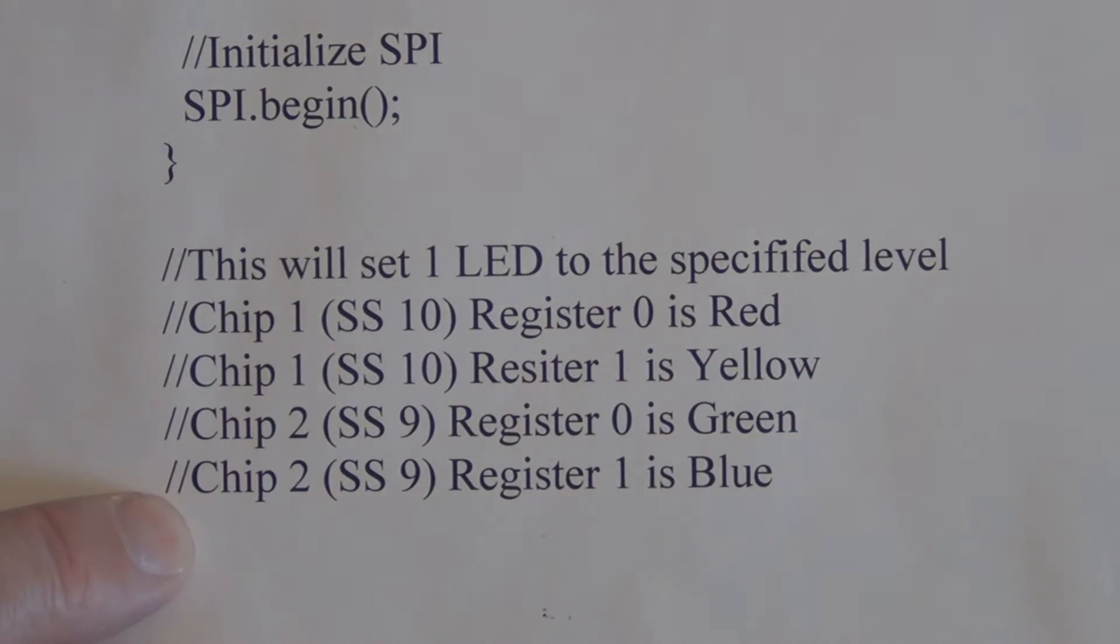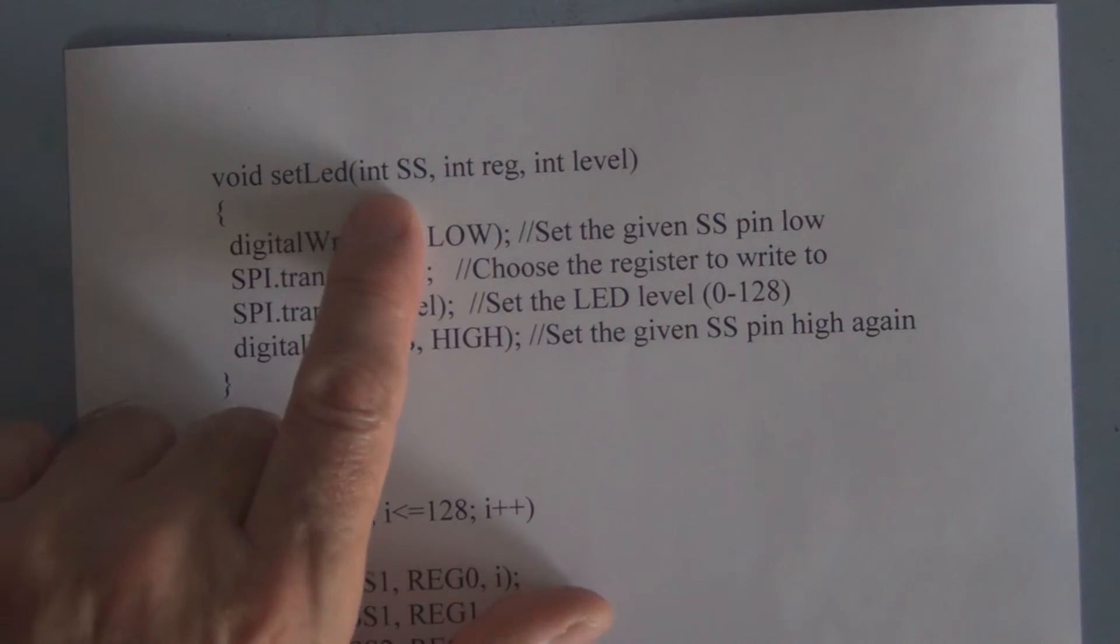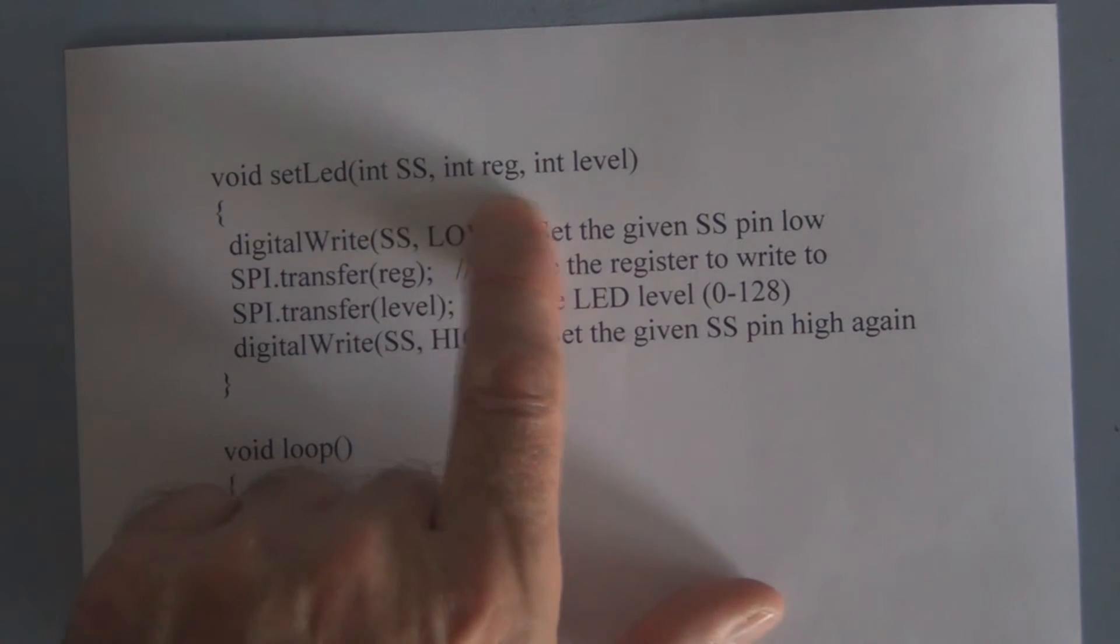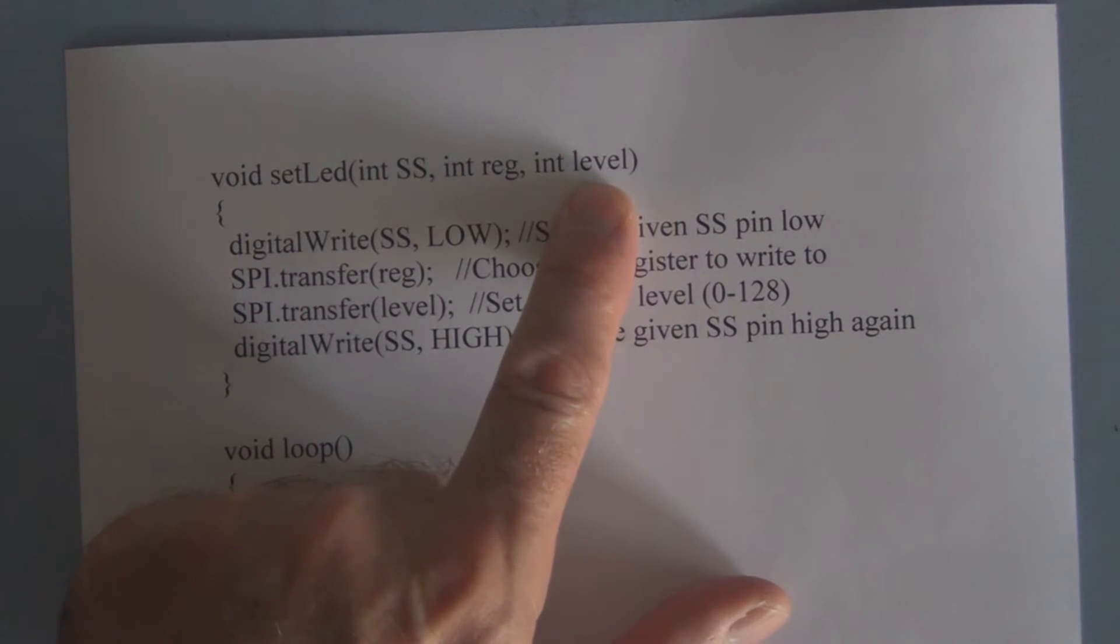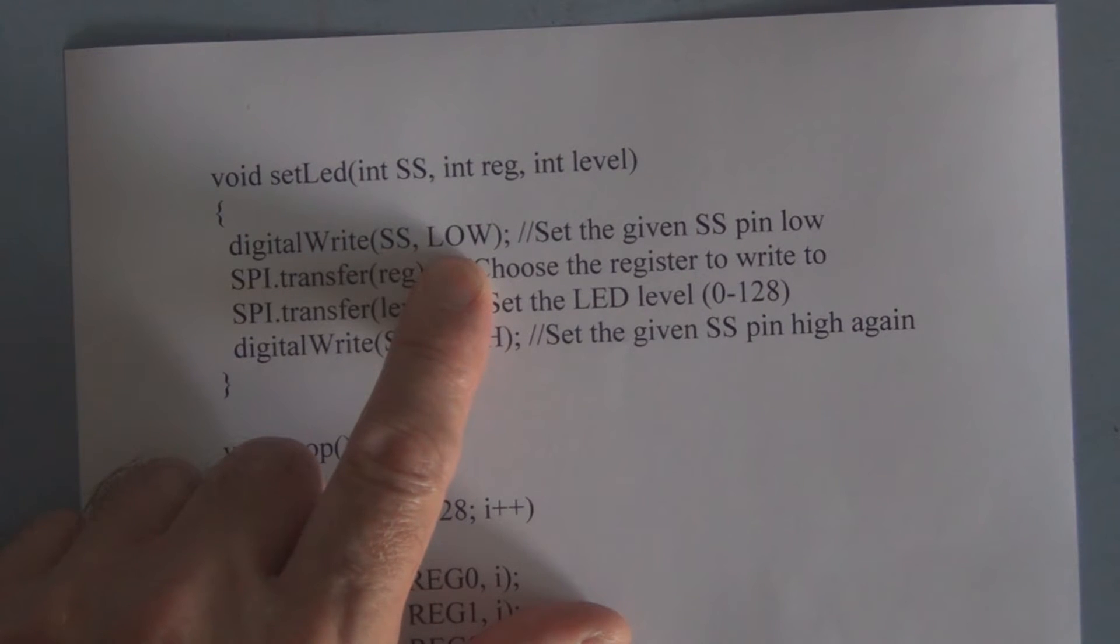Now we have void setLED. Each LED has a particular chip select for that LED because that LED is on a particular chip. Then we declare an integer for the register so we know which potentiometer, and then we have an integer for level, which is the number from zero to 128 that will control the brightness of the LED. The chip select will digital write low, which is an active low that will turn on the chip.